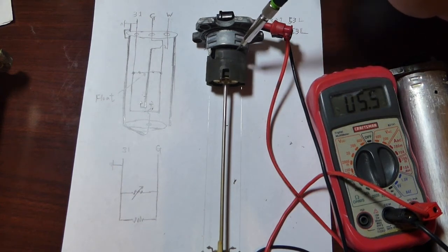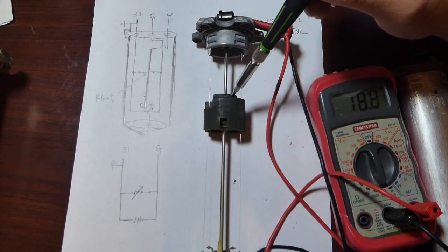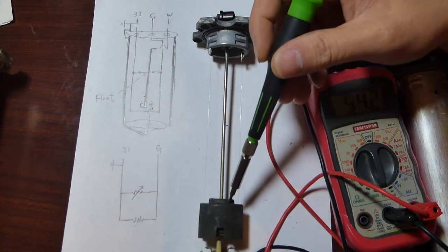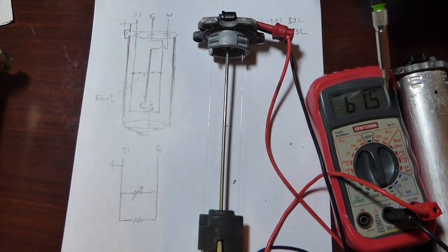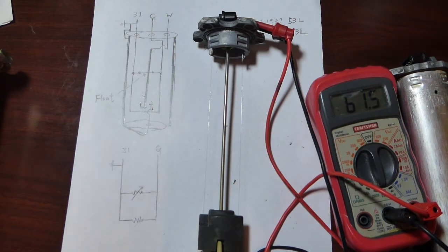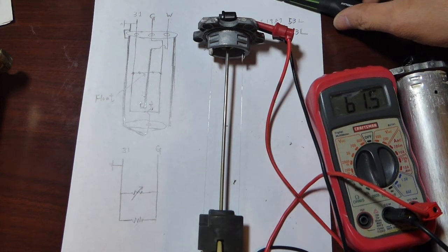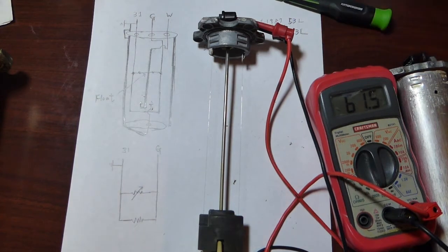As the float goes down, the resistance increases. All the way down, it should have about 60 ohms. That's the first function of this fuel level sending unit. The second function is the fuel warning light switch.